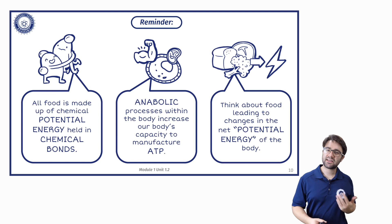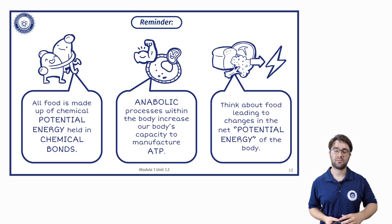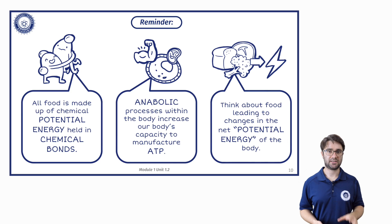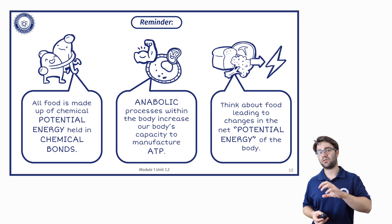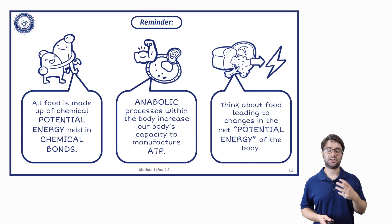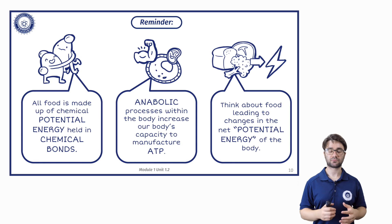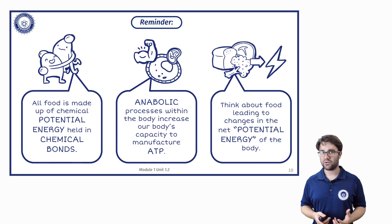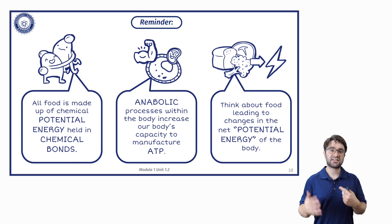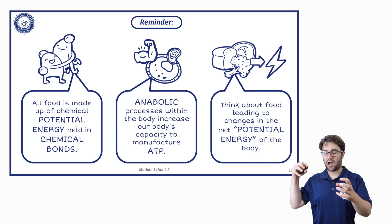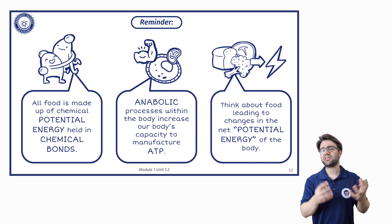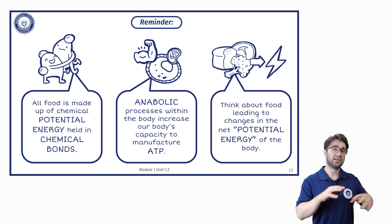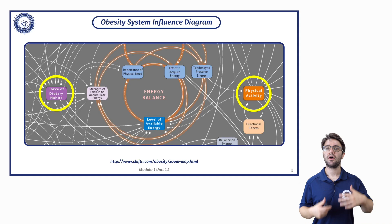When it comes to available energy, what exactly do we mean? If we cast our mind back to part one — I know it's slightly traumatic, but we need to go back to part one. Just remember that our food influences our ability to store energy. All of our food ends up either being used as energy or stored as potential energy held in chemical bonds. Anabolic processes increase our body's capacity to resynthesize ATP, so they increase our ability to store energy, and catabolic reactions harness that energy from stored energy. We need to think about food intake leading to changes in the net potential energy of the body — that's what we're talking about when it comes to the level of available energy.